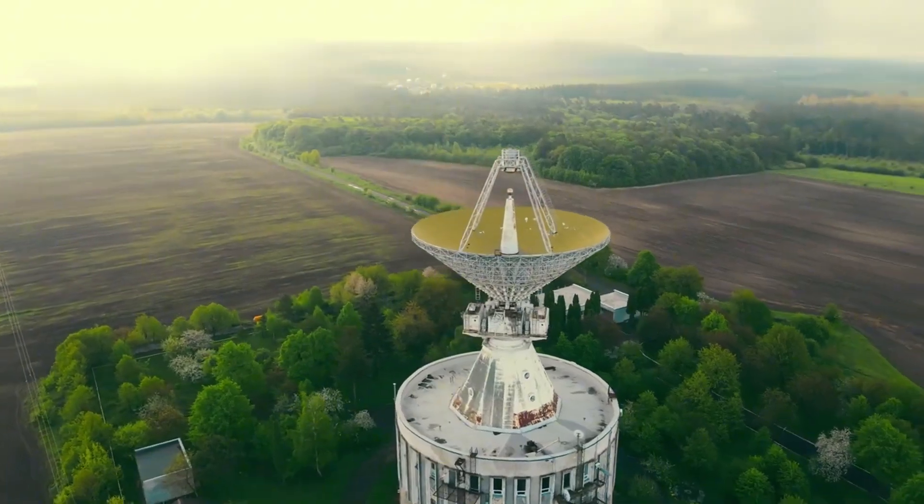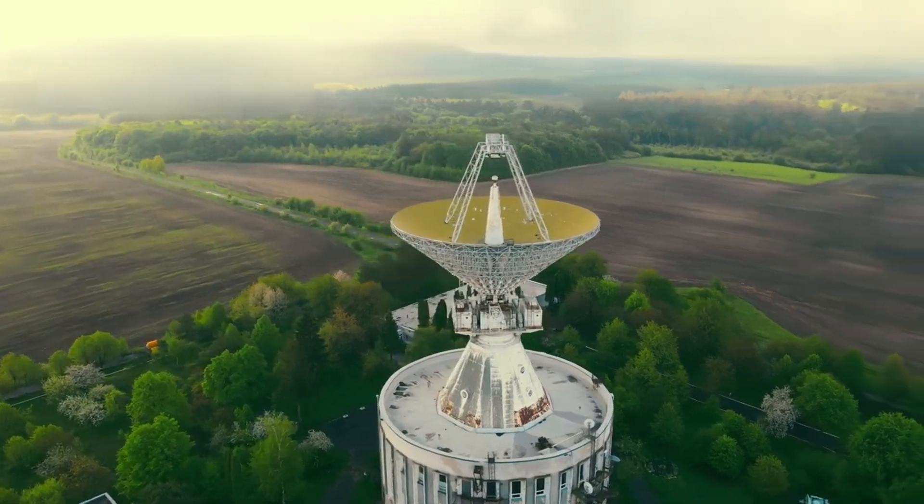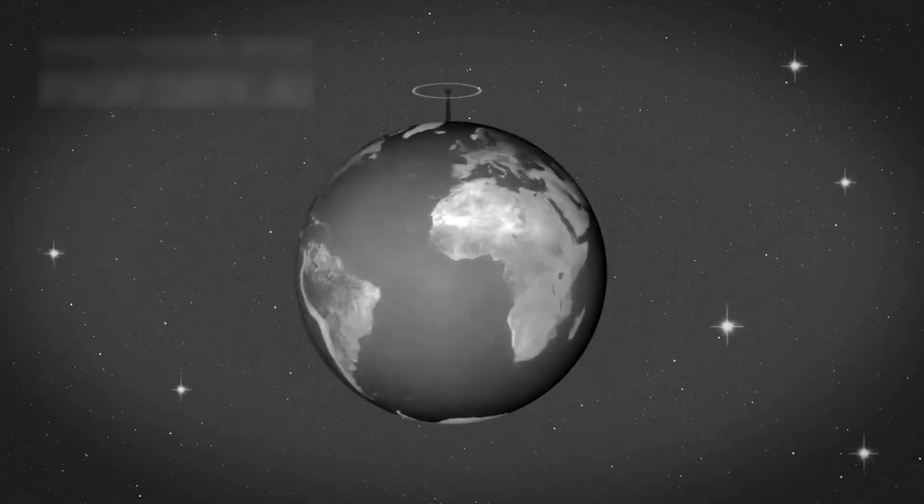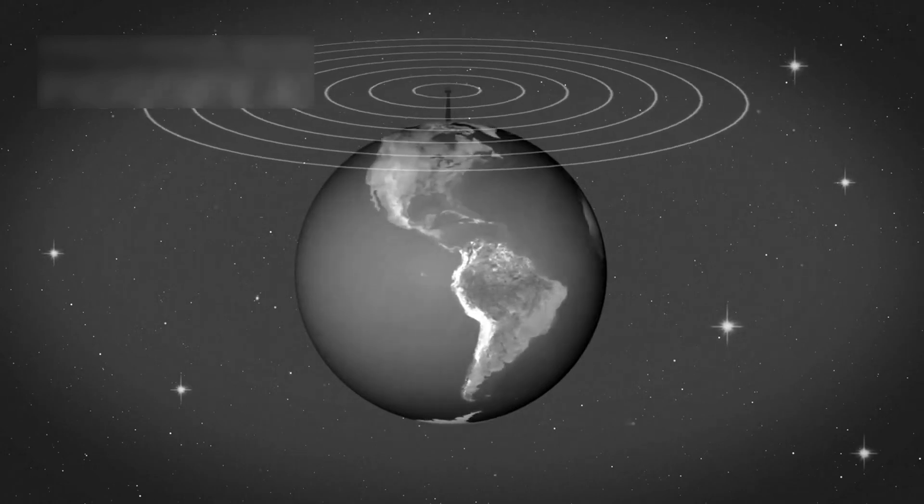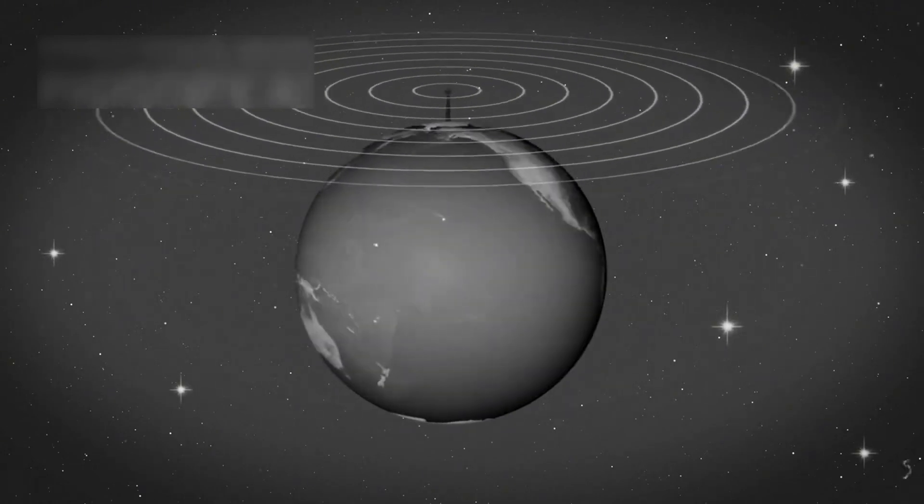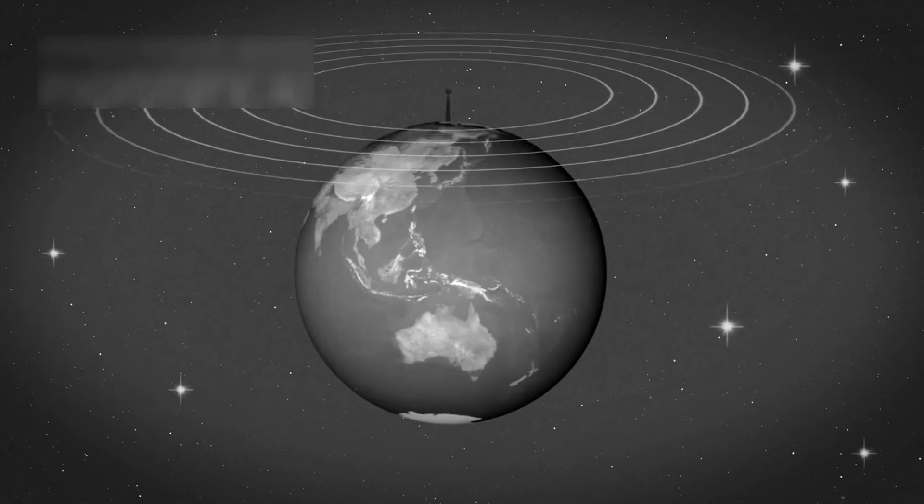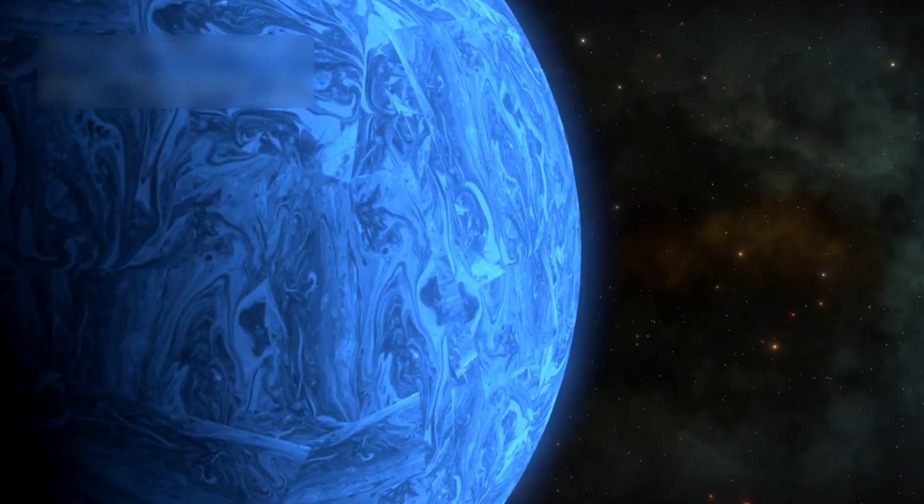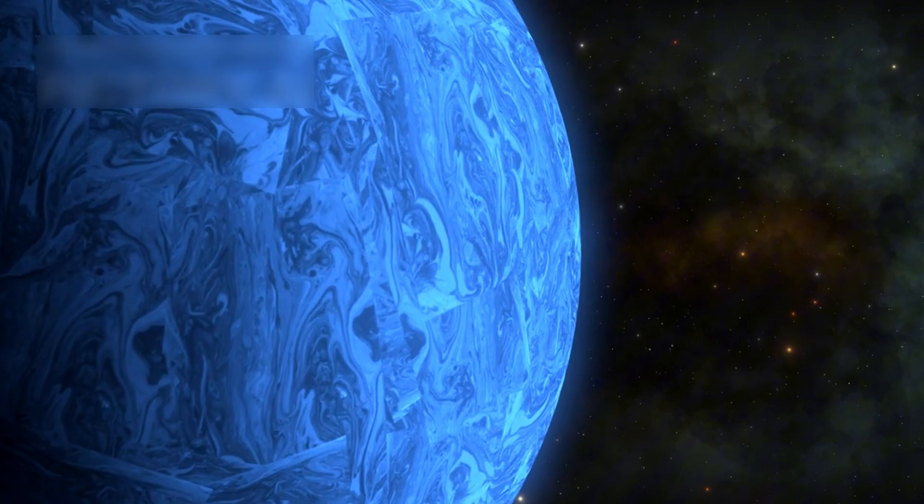Onboard both Voyager probes are the golden records, designed to communicate with possible alien life. These include sounds of Earth, greetings in many languages, and images of nature, humans, and culture. These disks are now sailing through the stars as a time capsule from our blue planet.